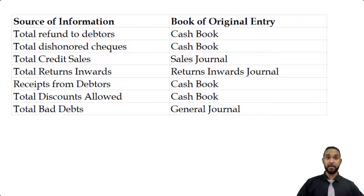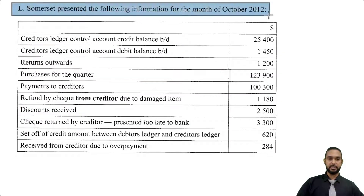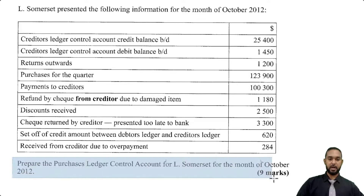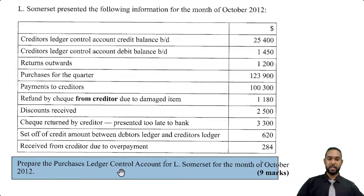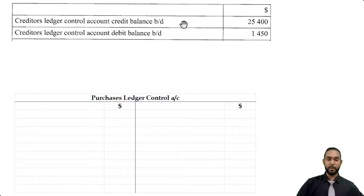Let's take a look at the next part of the question. L Somerset presented the following information for the month of October 2012. We are required to prepare the purchases ledger control account — the creditors control account — for L Somerset for the month of October 2012. Let's pull up the control account and populate it as we read through the items.